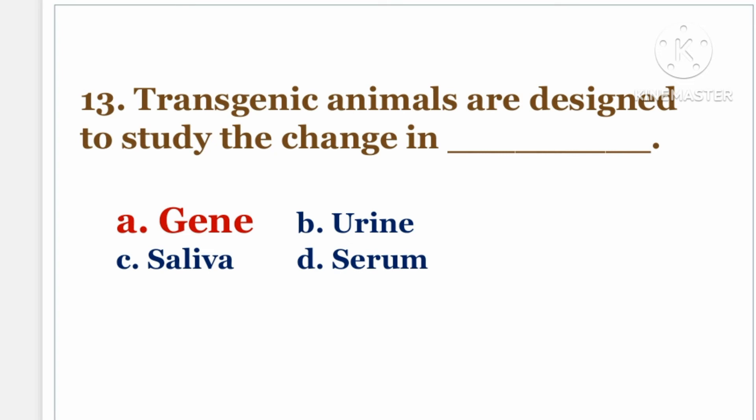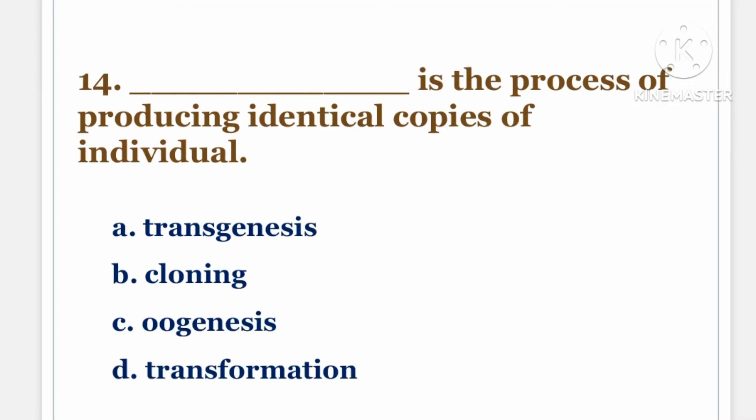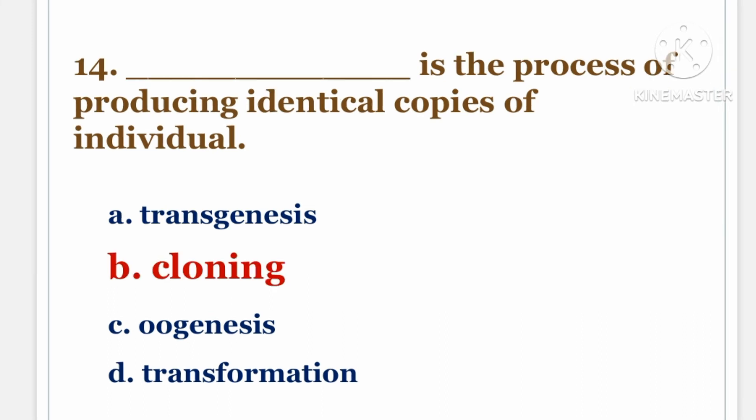Next question. DASH is the process of producing identical copies of an individual. The options are A. transgenesis, B. cloning, C. oogenesis, D. transformation. And the answer is B. Cloning.